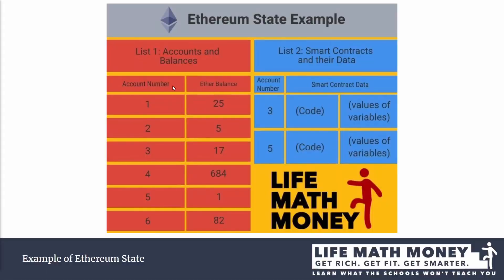As you can see, there are two lists. The first list has the accounts and balances for all accounts, and the second list has just the smart contracts with their account numbers, their code, and data. A smart contract can also have Ether stored in it — the third smart contract address has 17 Ether as its balance.